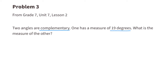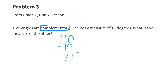Problem number 3, from 7th grade Unit 7, Lesson 2. Two angles are complementary. One has a measure of 19 degrees. What is the measure of the other? Since the sum of two complementary angles is 90, we can subtract 19 from 90 to find the missing measure. 90 minus 19 is 71, so the measure of the other angle is 71 degrees.